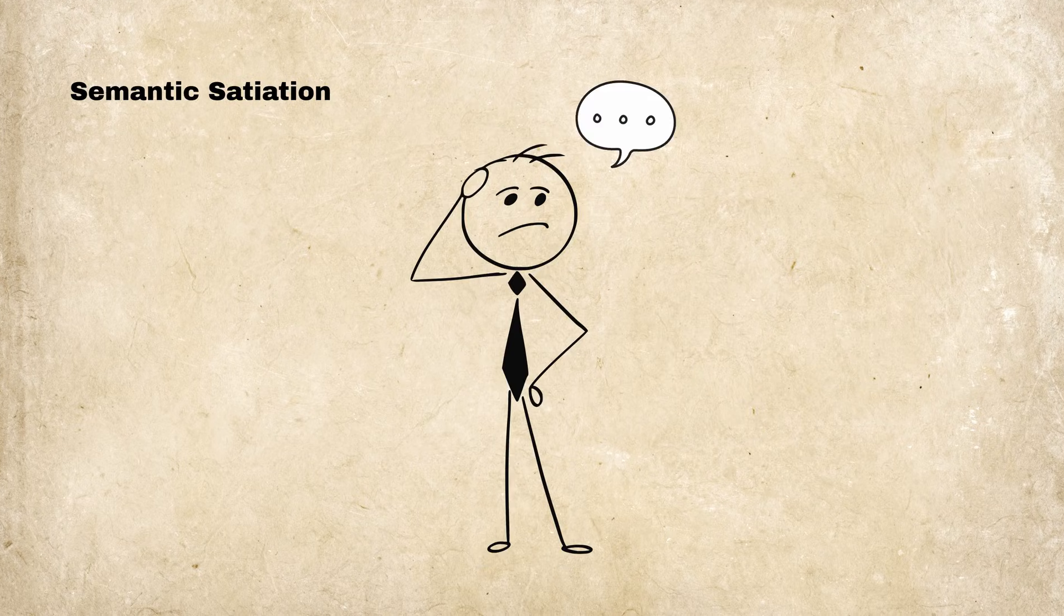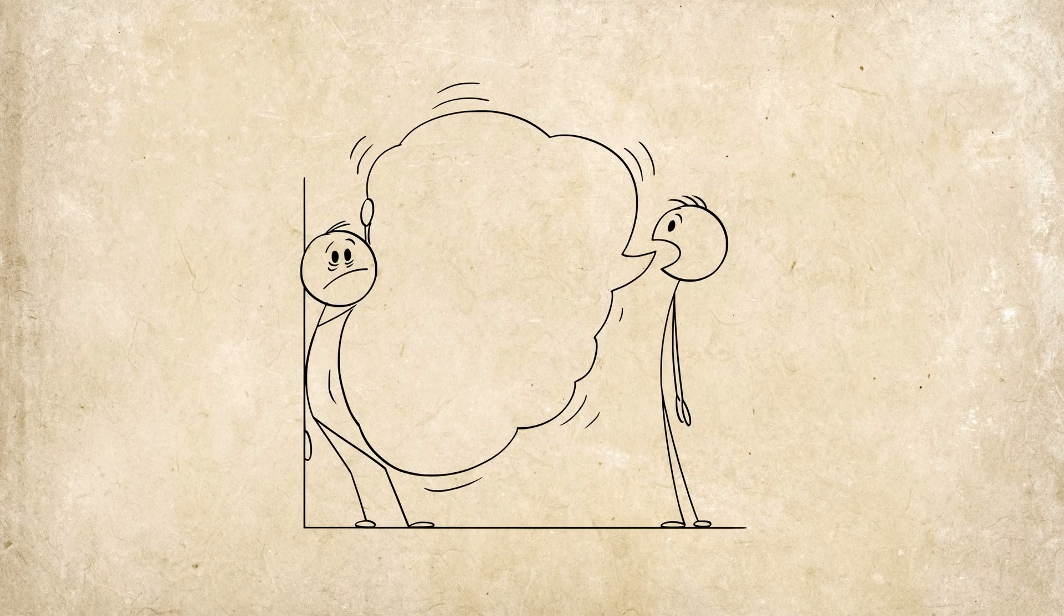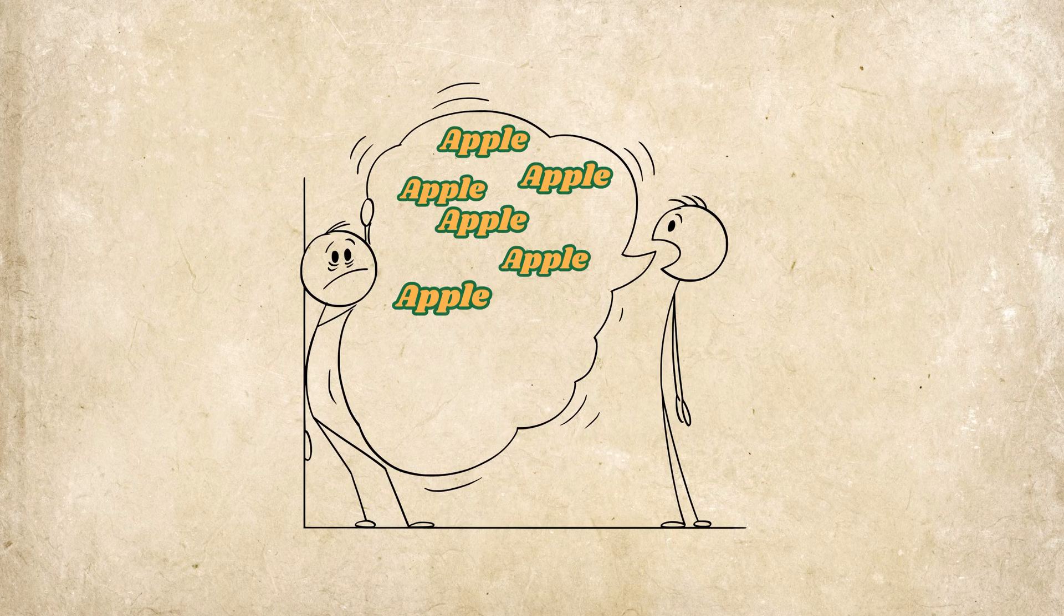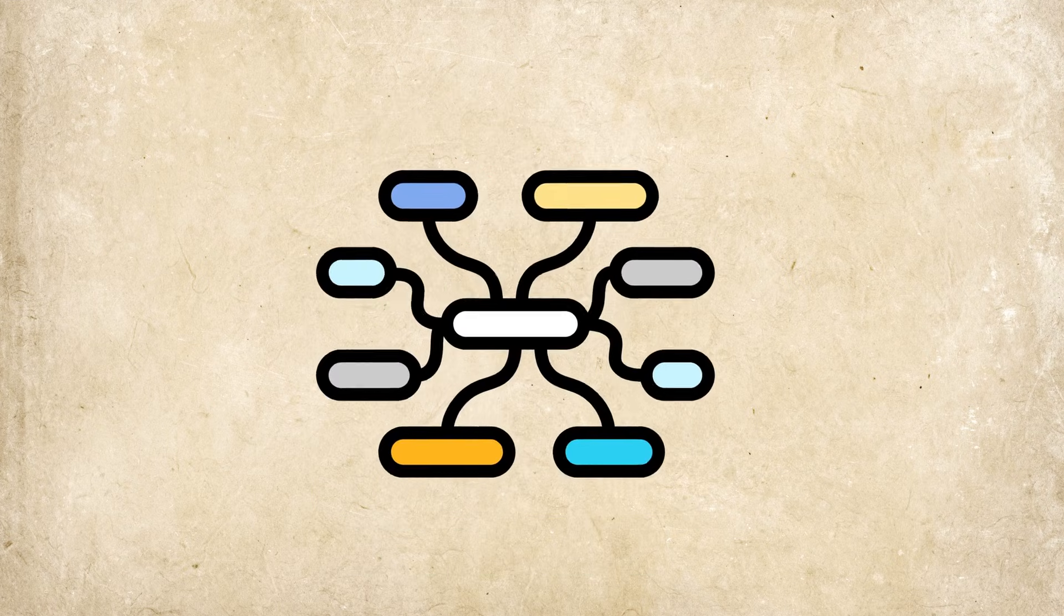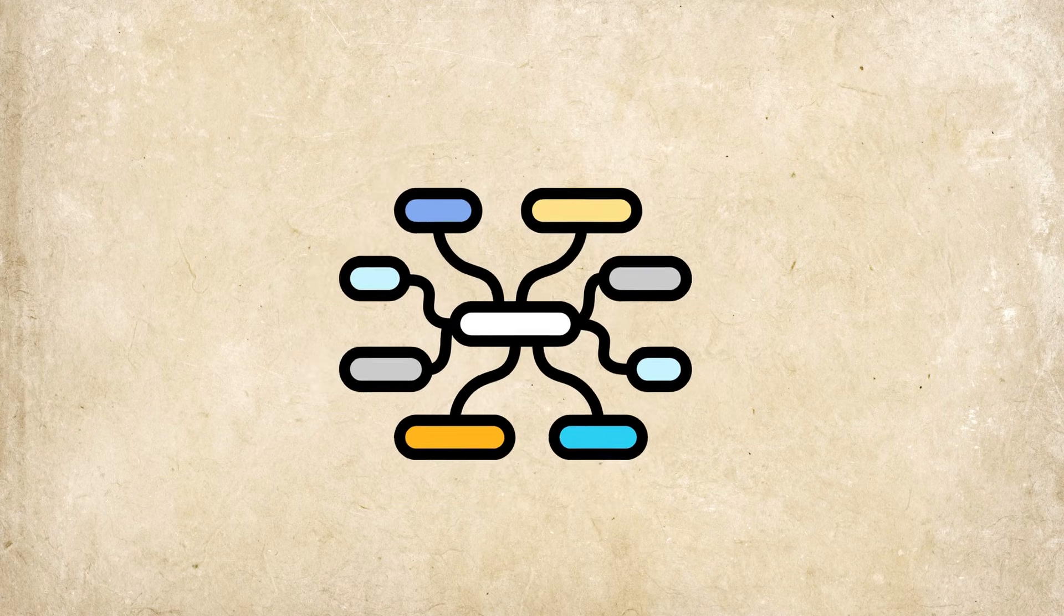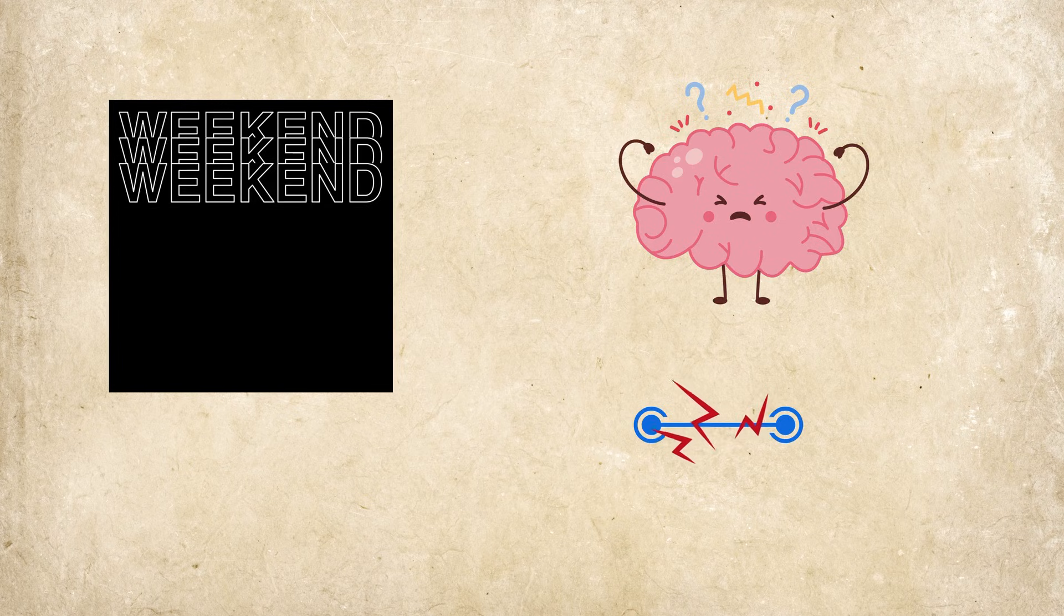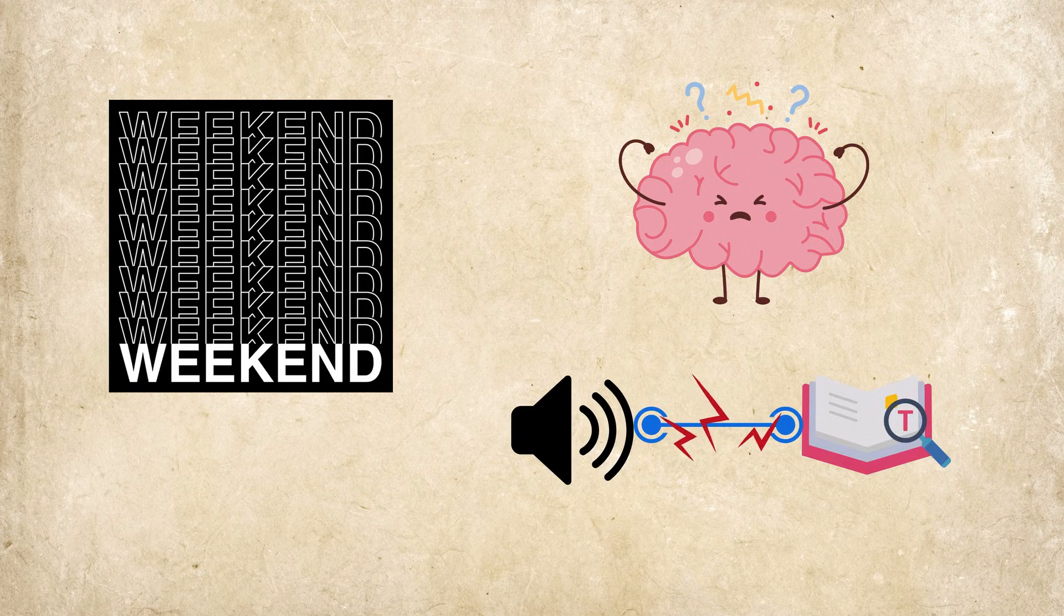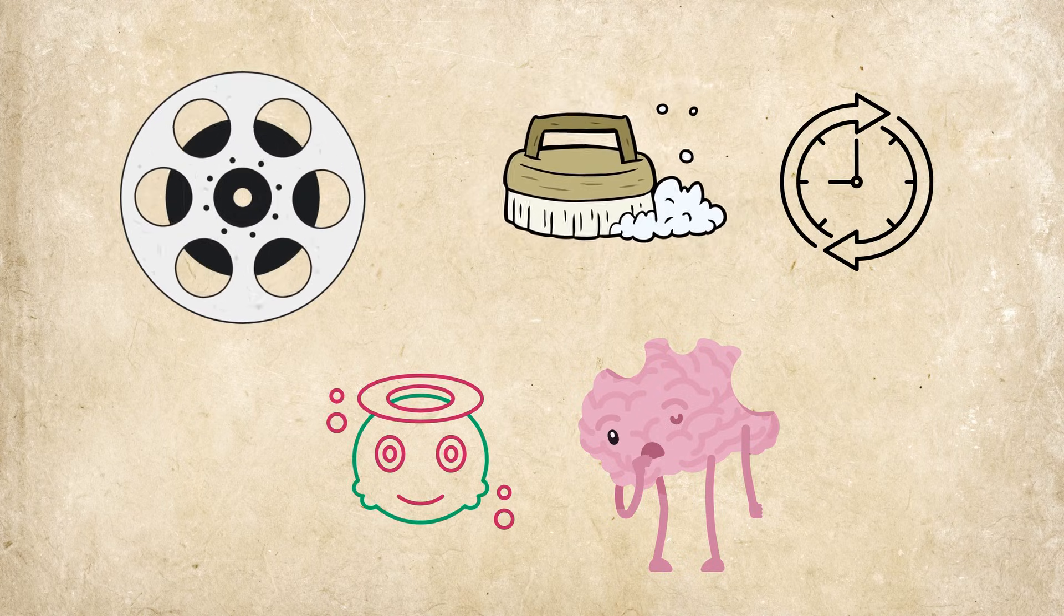Semantic satiation. Ever say a word so much it lost all meaning? Say a simple word, like Apple, over and over, and suddenly it feels like nonsense. That's semantic satiation, where repeating the same word causes your brain to short-circuit the sound-to-meaning connection, turning familiar language into alien phonemes. It's like breaking a video file by scrubbing it too long. Strange, but harmless.